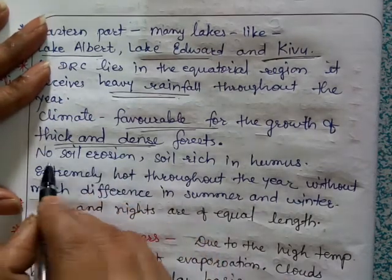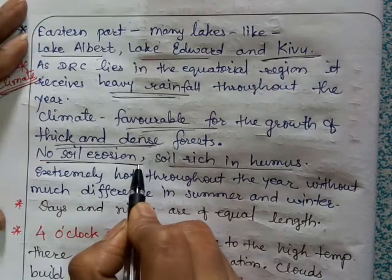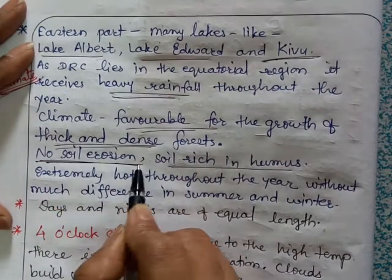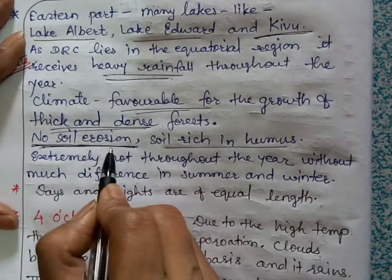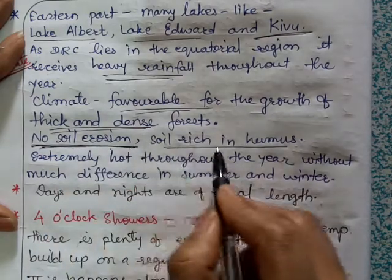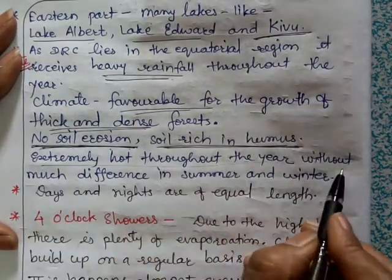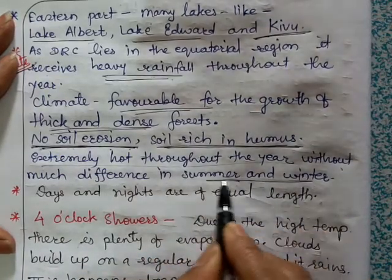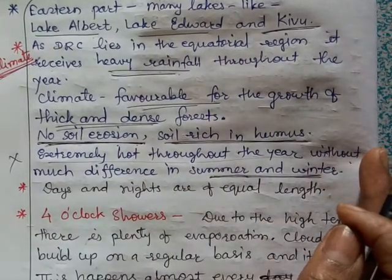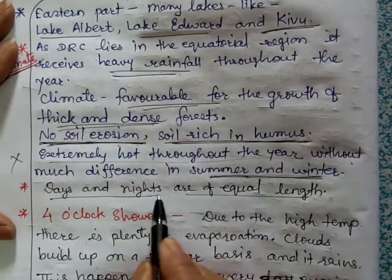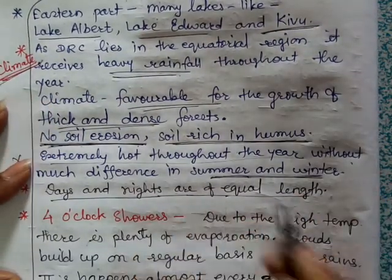There is no soil erosion because of the dense forest — the roots of trees and plants hold the soil so it does not get washed away by rain water. The soil is rich in humus. It is extremely hot throughout the year with little difference between summer and winter temperatures, and days and nights are of equal length because it lies in the equatorial region.